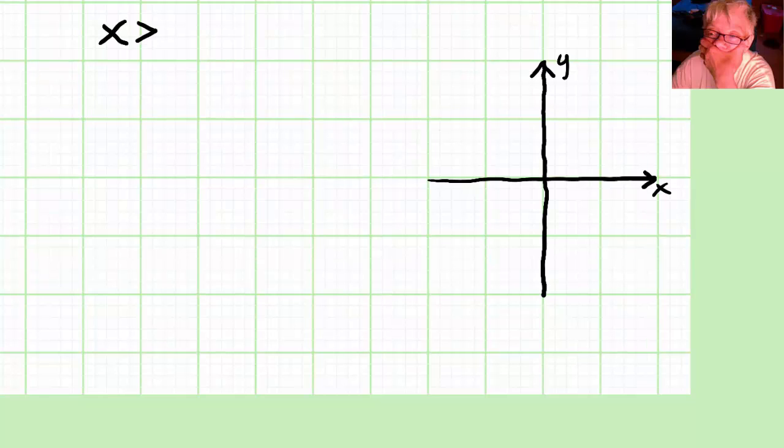We're going to graph x is greater than 6. And the greater than is a strict inequality, so we're going to have to make it a dashed line.